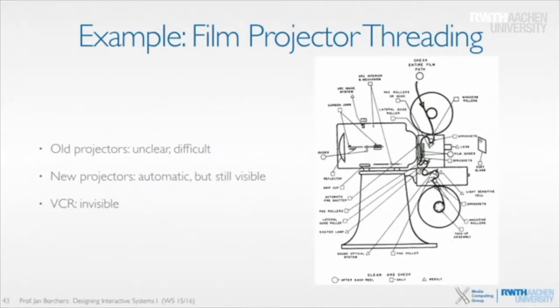What happened was that industry came up with projectors that would take the thread and do that automatically. You only had to hold the film reel into a little slot, and it would grab it and thread it through the entire machine by itself. The process became automatic and was still visible — you could see the film go through everything, but you didn't have to do it anymore. Easier from a user point of view as long as it worked; if it didn't, it was probably even worse than a manual system.